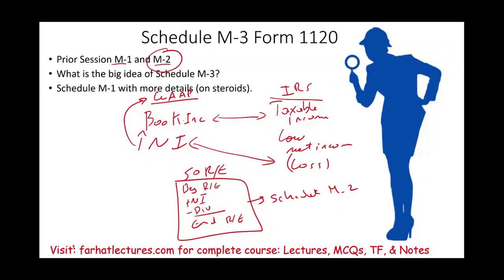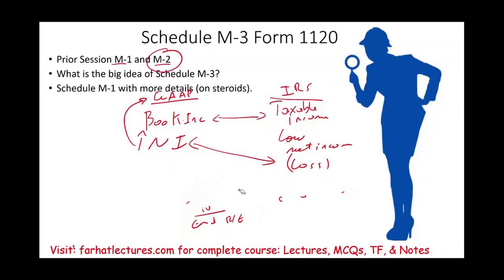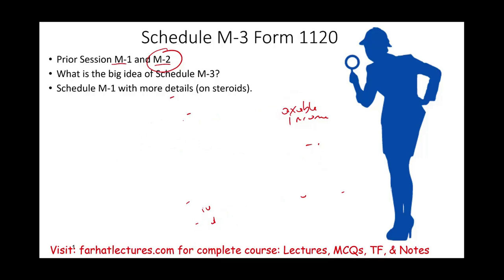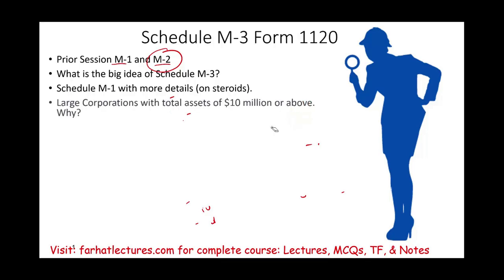Schedule M3 is simply Schedule M1 — the reconciling of GAAP to the IRS — with much, much more detail. It's Schedule M1 on steroids. It applies to large corporations with total assets of $10 million or above. Generally speaking, if you are a large corporation, you are subject to Schedule M3.